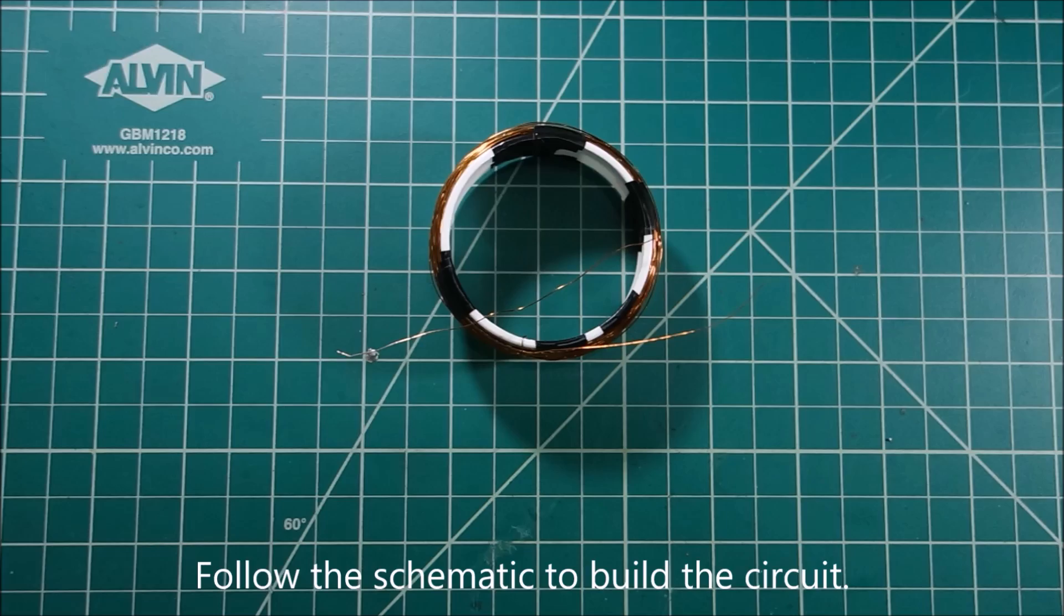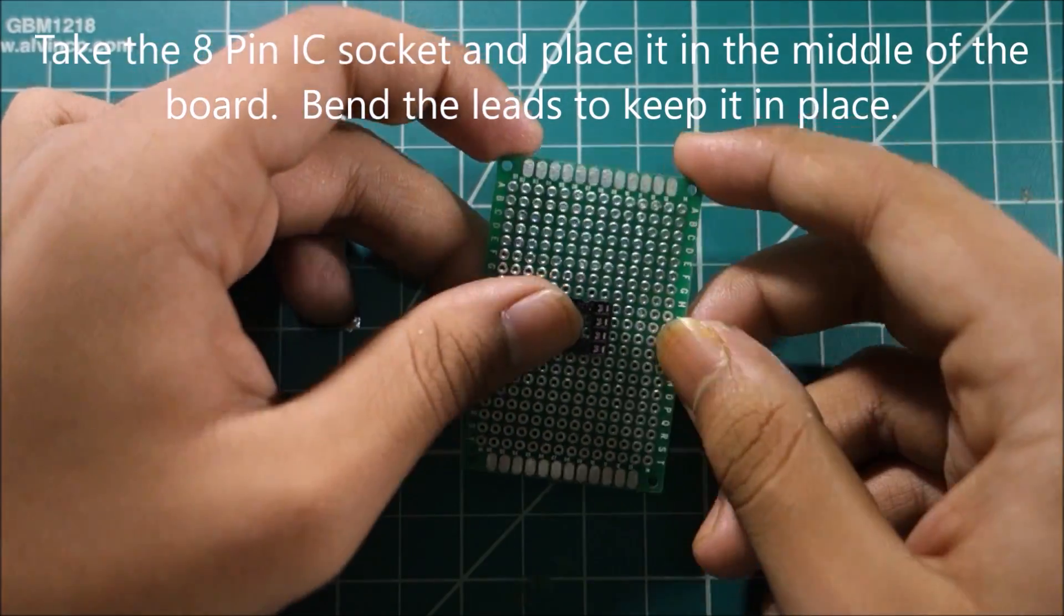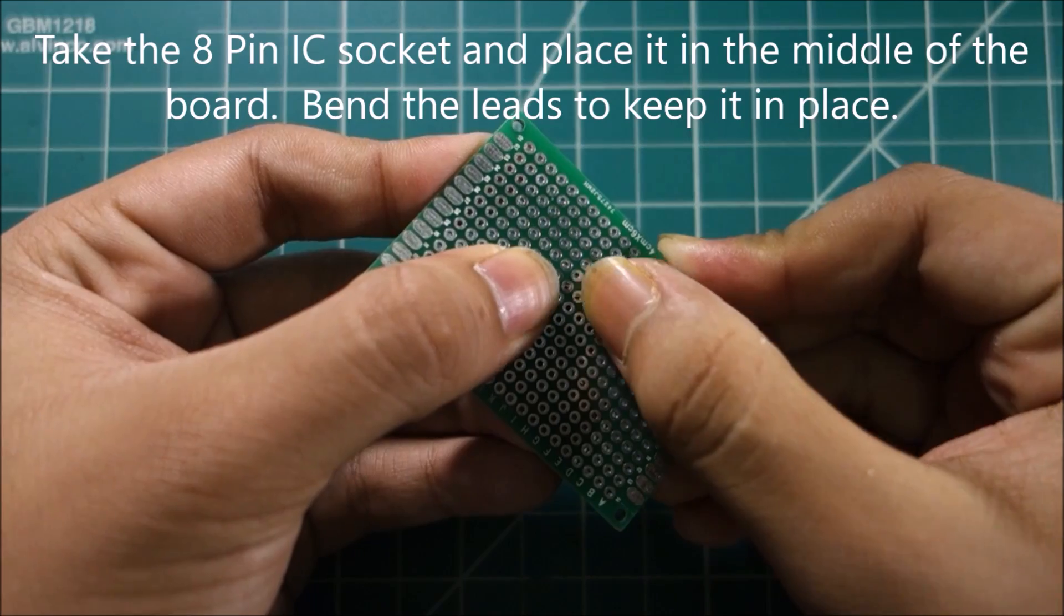Follow the schematic to build the circuit. Take the 8 pin IC socket and place it in the middle of the board. Bend the leads to keep it in place.